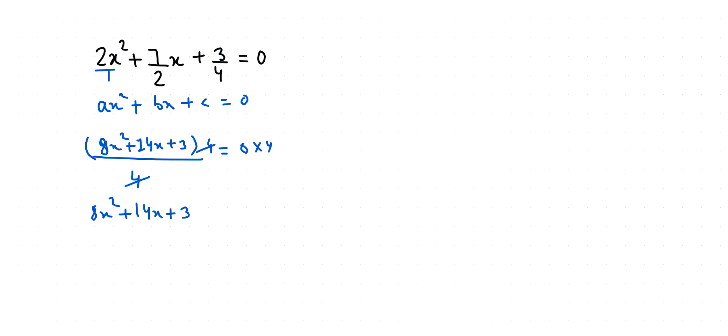Now x equals, I am going to use quadratic formula: minus b plus minus square root of b² minus 4ac, all over 2a. So x = -14 ± √(14² - 4×8×3) / (2×8).